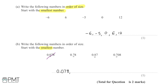Moving on to the next, we have three to choose from. Both of the remaining numbers have seven as the first decimal place, so we're going to look at the second decimal place — we have eight and zero. The one with zero is going to be smaller, so zero point seven zero eight is the next smallest, followed by zero point seven eight, and finally zero point eight seven, as it has the greatest value in the first decimal place.